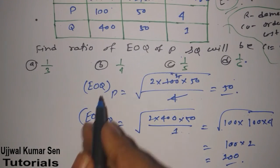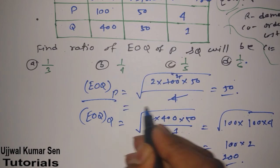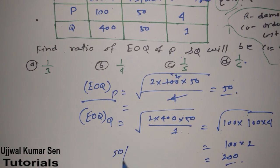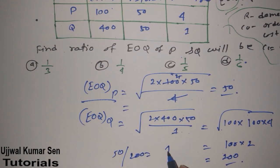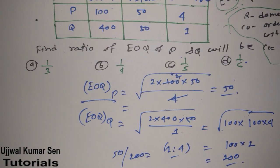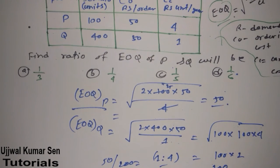So what they have asked? Ratio - we have to find out this. So what we can say, this is 50 divided by 200. So 1 is to 4. Now look at the options - options we have given 4: A, B, C, D. Now as you can see, option B is the right answer for this question.